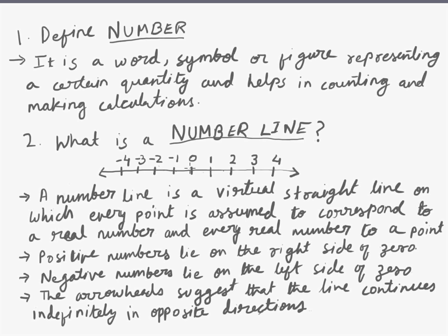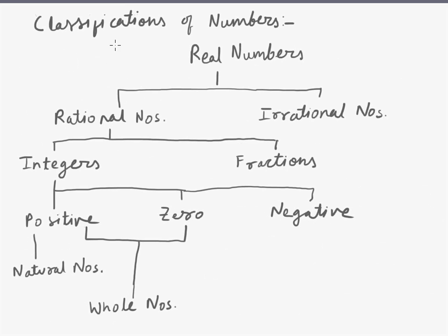We all know that both the positive numbers and the negative numbers are infinite in number. Hence, the arrowheads on the line represent that infinity.